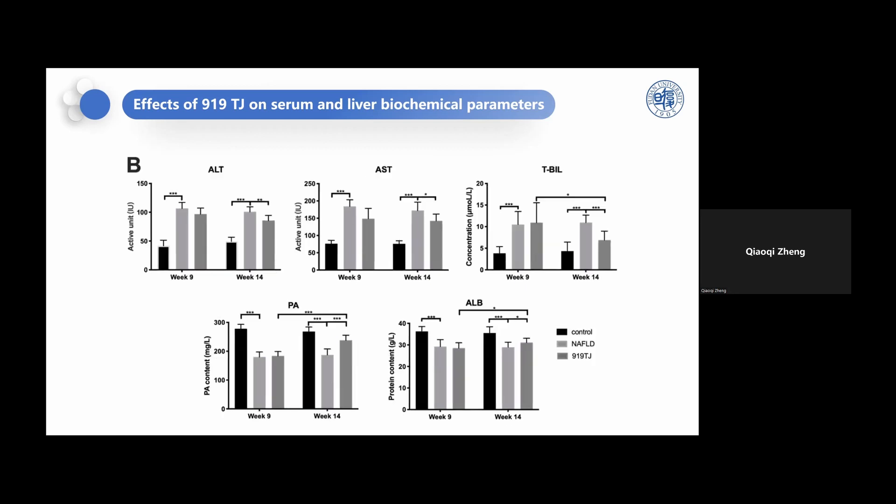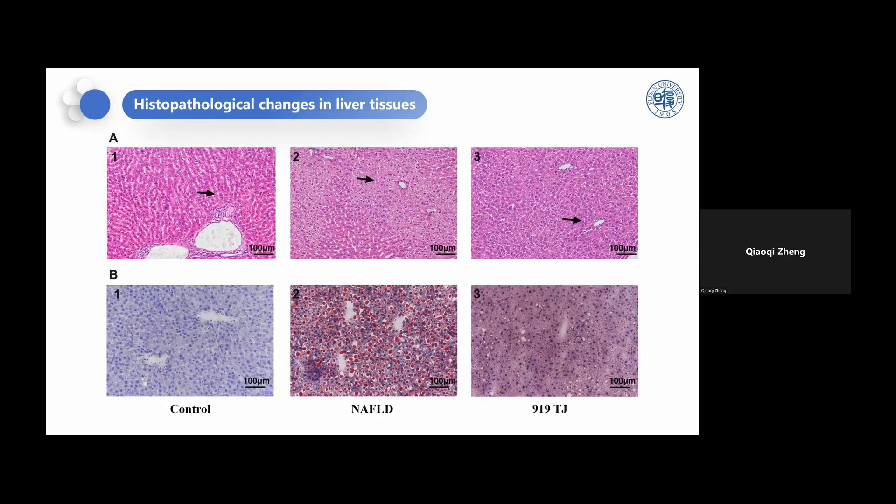However, at week 14, they were reduced in the TJ group. In addition, these indexes decreased in week 14 compared with week 9 in the TJ group. What's more, after nine weeks modeling, the serum levels of ALT, AST, and TBIL were higher, and those of ALB and PA were lower in the model group and TJ group than in the control. Then in week 14, the levels of these indexes were reversed in the TJ group compared to the model. Accordingly, we have established the NAFLD model successfully, and the 919 syrup can improve the damaged liver function caused by the high-fat diet.